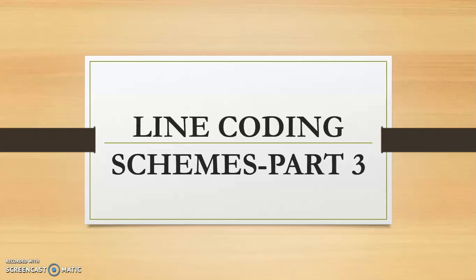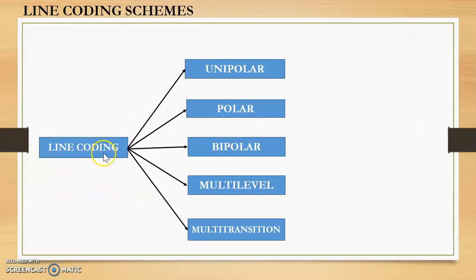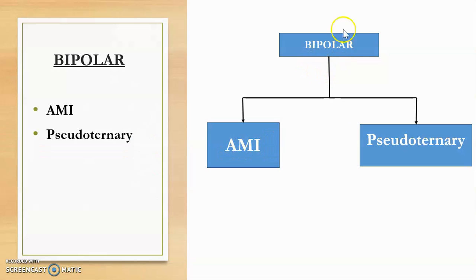In this video we will continue with line coding schemes, specifically bipolar line coding. Under bipolar there are two types: AMI and pseudo ternary. As discussed in previous videos, there are five line coding schemes: unipolar, polar, bipolar, multilevel, and multitransition. The first two have already been discussed, so in this video we will study the bipolar line coding scheme with its two types, AMI and pseudo ternary.